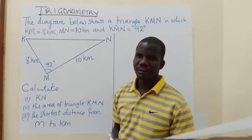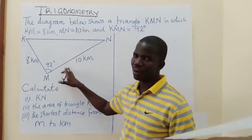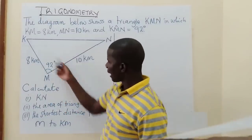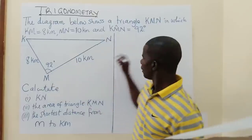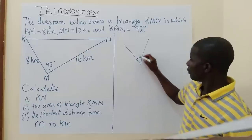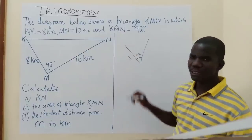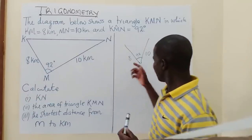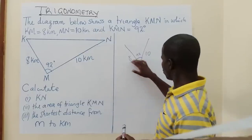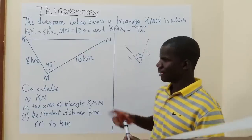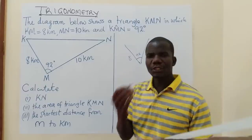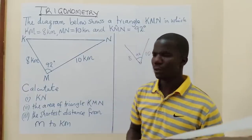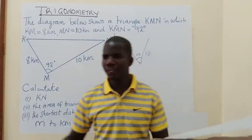We are dealing with a non-right-angle triangle. When you look at this triangle, we are given the angle here — this angle is given as 92 degrees — then we are given 8 kilometers and another side. We mentioned that when you are given two sides and one angle, and those two sides meet at the point where the angle is given, you must know that the rule that applies is cosine rule. You may have difficulty knowing which is applicable — sine rule or cosine rule.